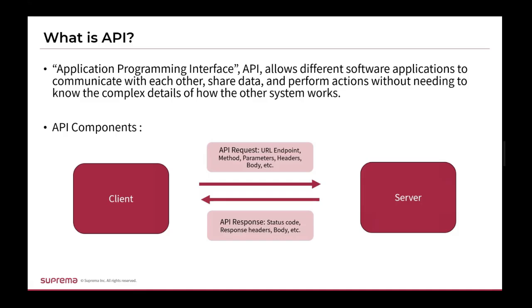Then we have the actual API request. It typically includes the URL endpoint, which is the access point to a resource; the HTTP method, which defines the operation to be performed; parameters, which are data sent with the request to provide specific instructions; headers, which are metadata about the request; and the body, which is the actual data sent to the server.